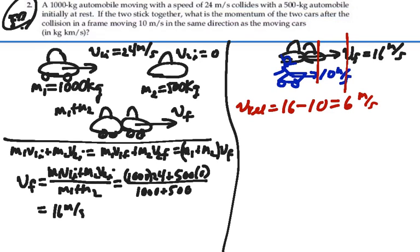So it's moving at 6 meters per second with the total mass of 1500 kilograms. So our momentum relative will be the mass times the relative velocity.